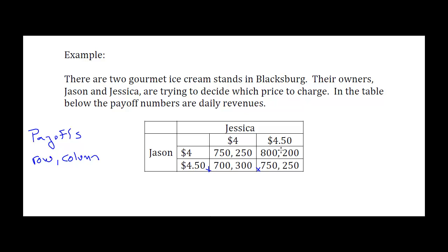The other possibility is 800, 200. Could that be a Nash Equilibrium? If Jason's getting 800 by using a $4 strategy and Jessica is using a $4.50 strategy, then Jason cannot make himself better off by switching from $4 to $4.50, because he goes from 800 to 750 — that's no good, so he doesn't want to change. But Jessica's picking $4.50 and getting 200; if she switches to $4 she gets 250, so she doesn't like that. That's not a Nash Equilibrium.